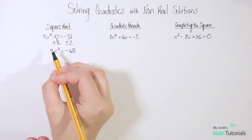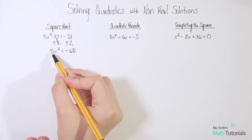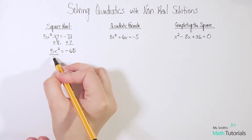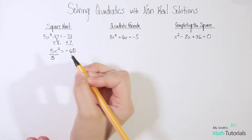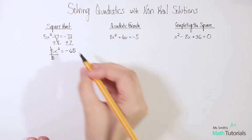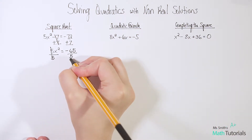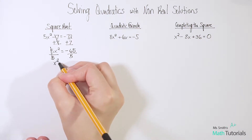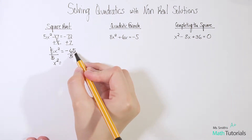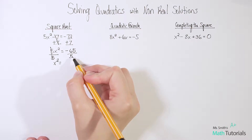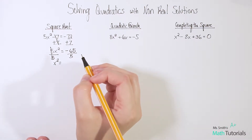Using my inverse operations now, I recognize that this is 5 times x squared and I want to get the x squared alone, so I'm going to divide — that's how I undo times. Divide by 5 to cancel it, and if I do that to one side, I have to do it to the other. So at this point I've got x squared equals negative 65 divided by 5, which gives me negative 13.